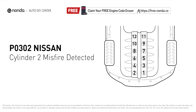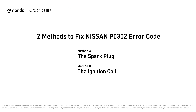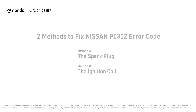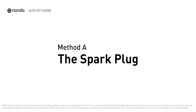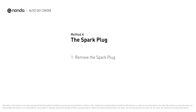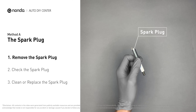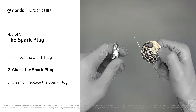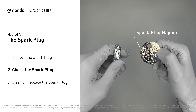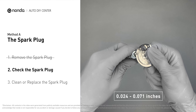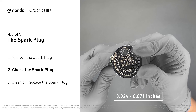Here are two of the most practical solutions to fix Nissan's P0302 error code. Method A: the spark plug. The spark plugs are located at the engine end of the wires, under the plug covers that attach them. First, carefully remove the spark plug. Use a spark plug gapper to check the spacing — normally the spacing should be between 0.024 to 0.071 inches.